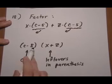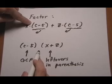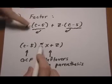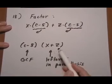And if we were to multiply it out back again, this entire (c-5) times x gives us this, x(c-5) plus (c-5) times z gives us that. We would get the same thing back again.